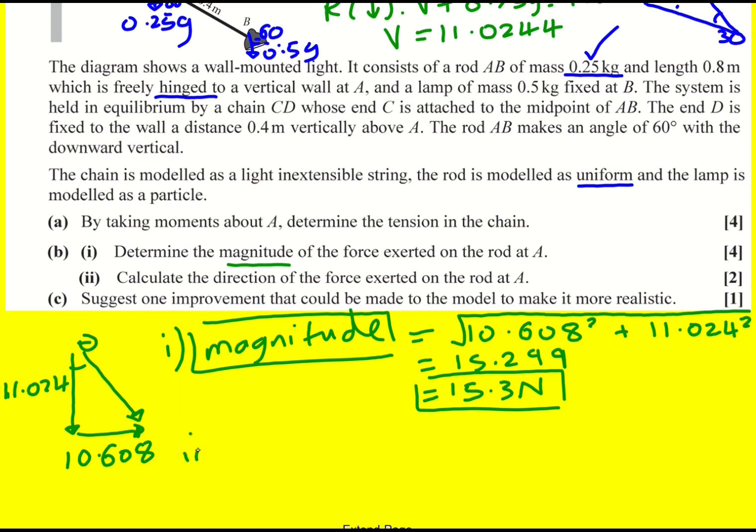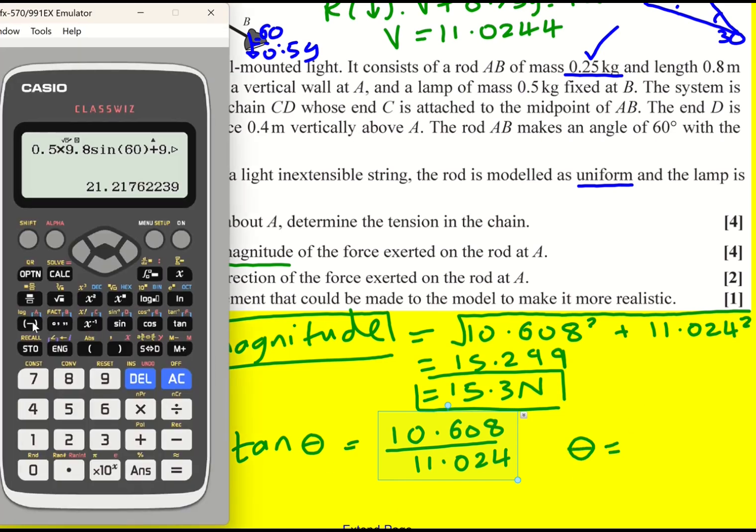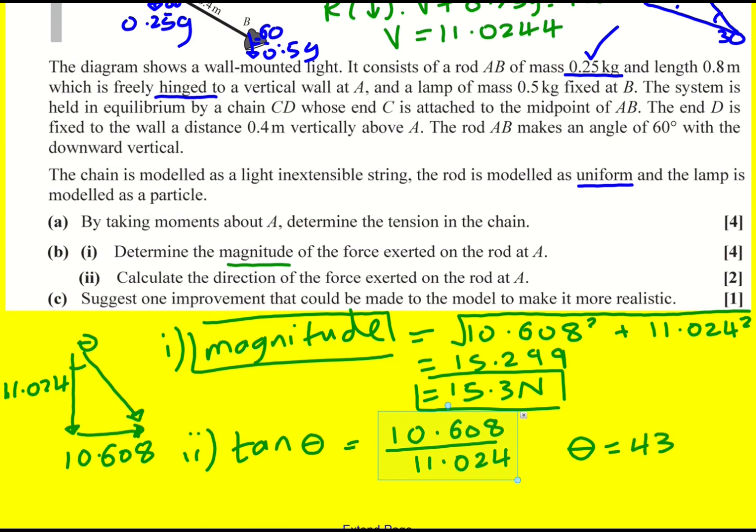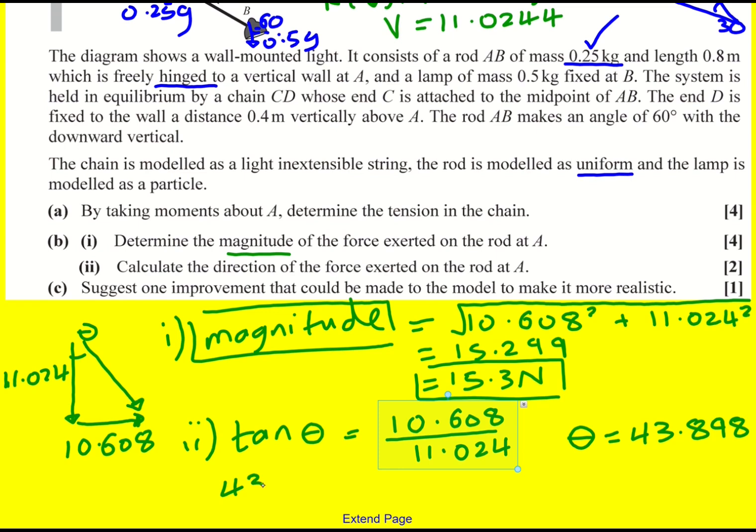And then the direction, I can do tan theta is the opposite, 10.608, all over 11.024, and do inverse tan. 43.898.